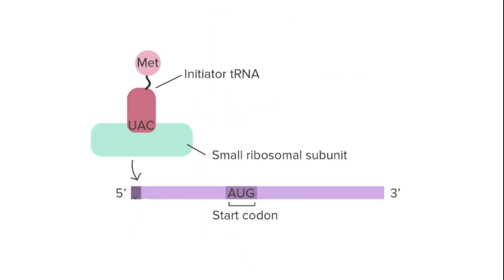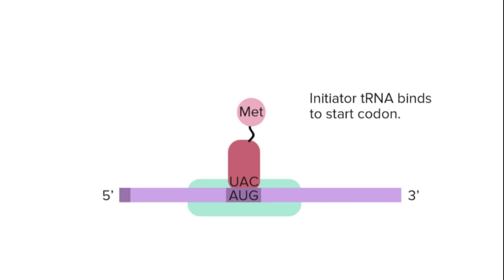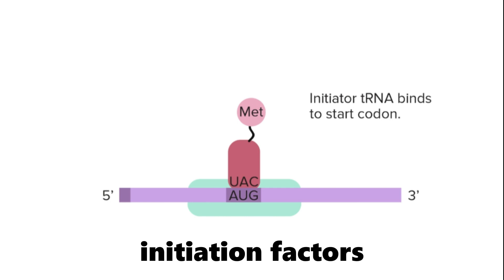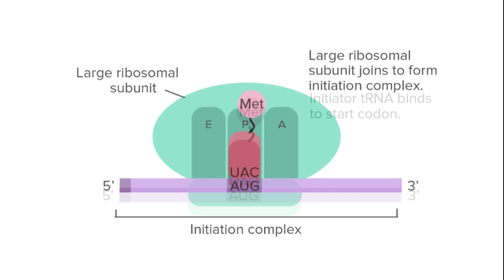The process of protein synthesis begins when the small ribosomal subunit attaches to the mRNA strand at a specific sequence known as the start codon. This initiation complex is facilitated by various initiation factors. Once the start codon is recognized, the large subunit joins the small subunit to form a fully functional ribosome ready to synthesize proteins.